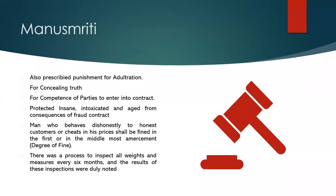Punishments were prescribed under the Manu Smriti for adulteration, concealing truth, and even for competence of parties to enter into contract — protecting insane, intoxicated, and aged persons from the consequences of fraudulent contracts. These provisions are now found under the Contract Act. Dishonesty was also taken up as an offense, and weights and measures were inspected every six months. Results of these inspections were duly noted and publicized.